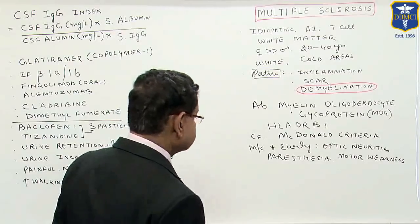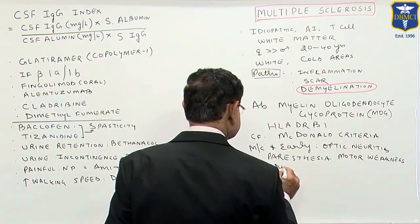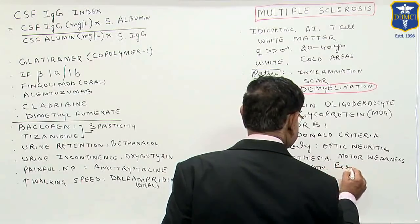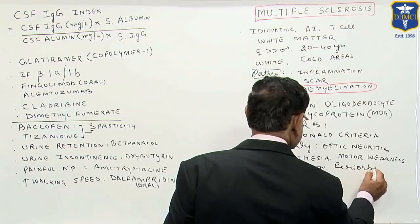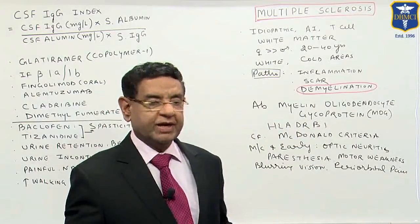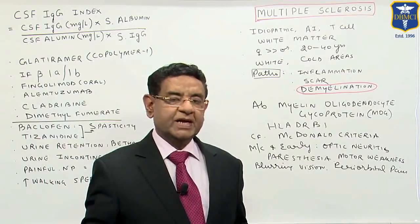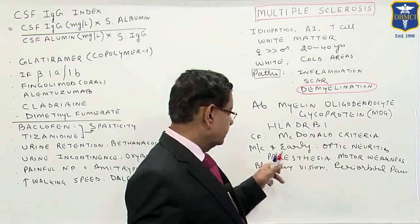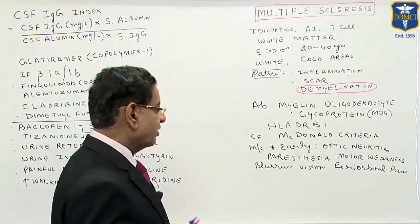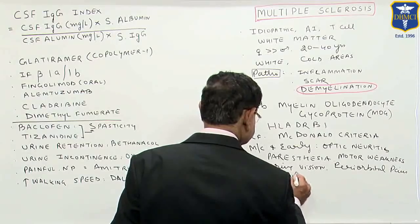Due to optic neuritis, there may be blurring of vision or some vision disturbance, and there may be periorbital pain. As far as motor weakness is concerned, the patient may come with paraplegia or some focal deficit. In sensory disturbance, the patient can have numbness, paresthesias, and later on there can be painful neuropathy.